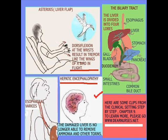Dorsiflexion at the wrist results in tremor, like the wings of a bird in flight. These patients may progress to what is called hepatic encephalopathy — when the liver is so damaged that ammonia goes to the brain and they become very lethargic with mental confusion. Ultimately they become comatose and might even require intracranial pressure monitoring.